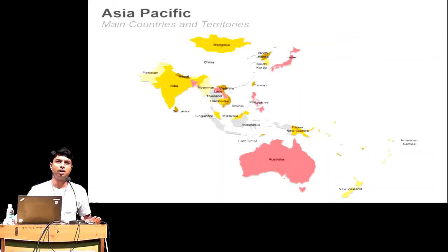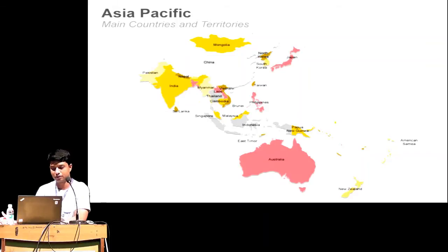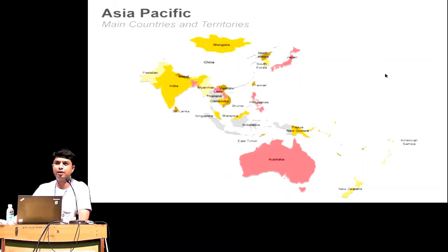The majority of these countries are non-English speaking — their first language is not English. For example, in India, Hindi is our national language and we still have 22 official languages, with each state having one major language. If you take the example of Nepal, or China — we call it CJK: Chinese, Japanese, and Korean — all have different scripts and languages. Indonesia has Indonesian as a language. Internationalization is very important for APAC countries and whatever applications you're developing targeting these countries.